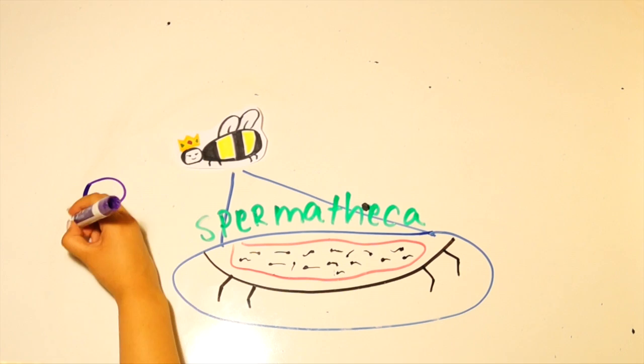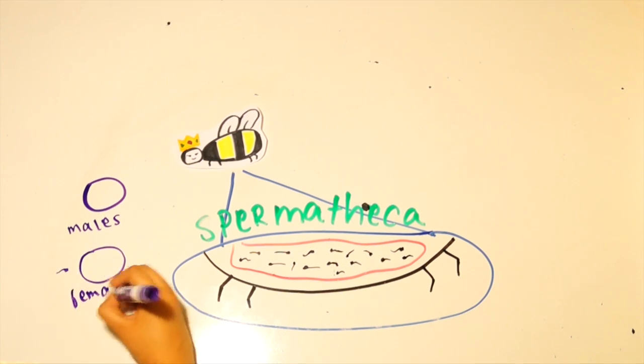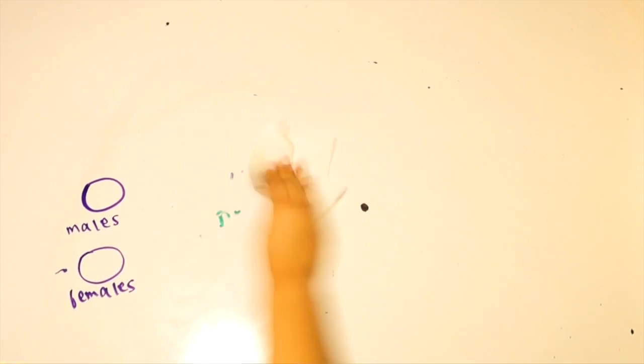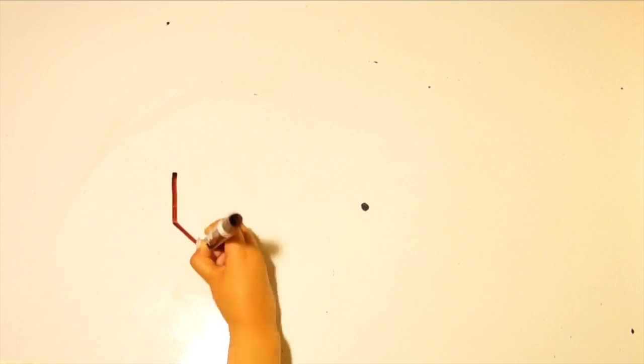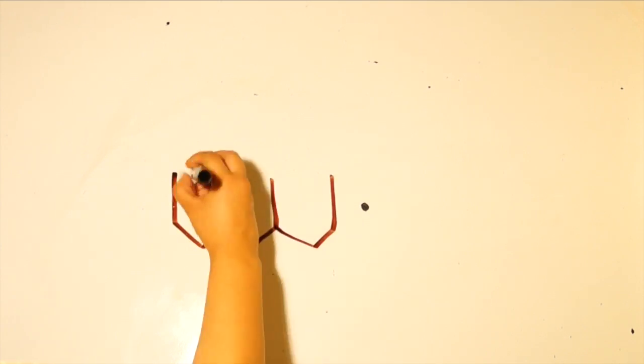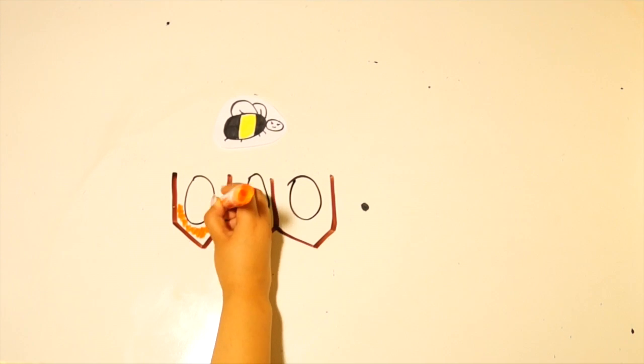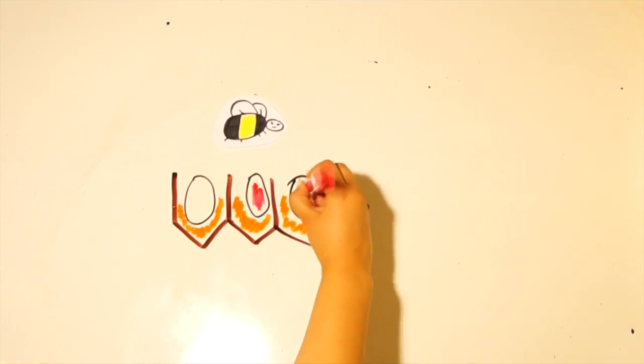Then, she can decide which eggs she wants to fertilize, if she wants her offspring to be males or females. In the spring or summer, she will lay about 2,000 eggs within the honeycombs of the hive. These eggs are fed jelly by the worker bees in the hive.